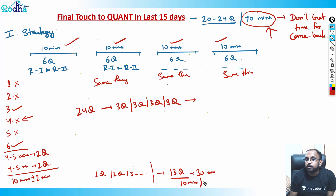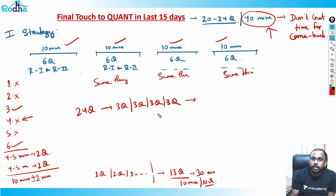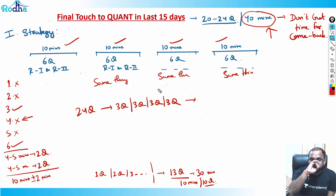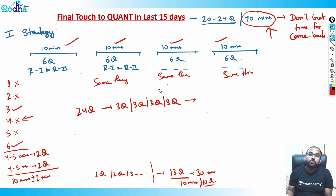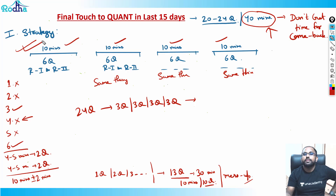With 10 minutes left and 11 questions remaining, you panic. You're thinking: question 14 I can solve, maybe 15 is easier, 16 looks lengthy, 17 I can do — but what about question 24? So many things running in your mind. That's when you mess up the paper. That's why never attempt the paper randomly.